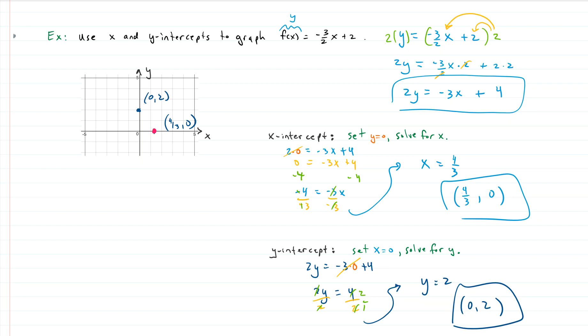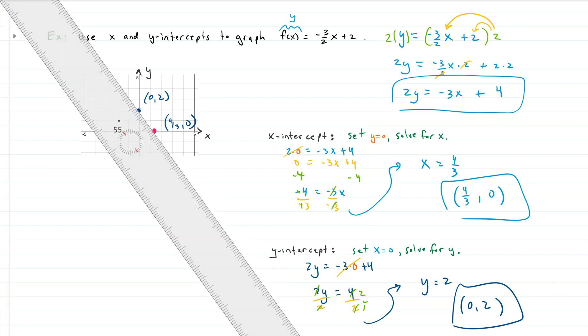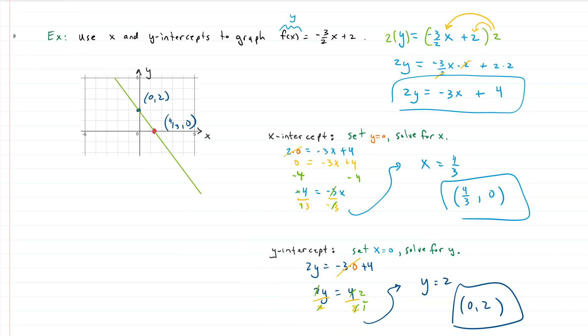Now, all we have to do to graph is just connect the dots. So if we have a ruler to help us, we can create a beautiful line here. And this is the equation of the line f of x equals negative 3 halves x plus 2. So we can find equations, we can graph equations using the x-intercepts. We can find x and y-intercepts by setting the opposite variable equal to 0 and solving for the variable we want. Hope this was helpful and have a good day.